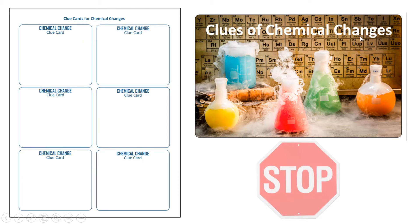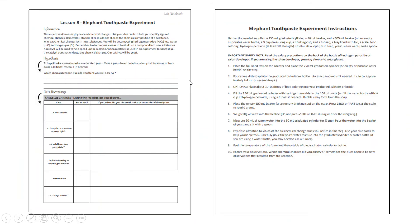I want you to do that now because we're going to talk a little bit about it, but more so so that you have it done. Then you can come back to this video if you need to. Now bring the chemical changes clue cards — that's hard to say, say it ten times fast! And bring it to class on Thursday. You should have the lesson 8 elephant toothpaste experiment printed up before you, of course.